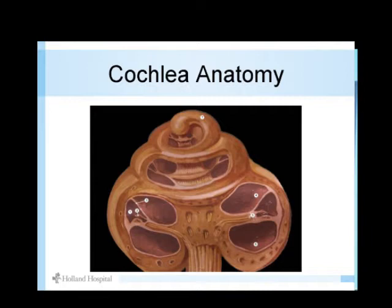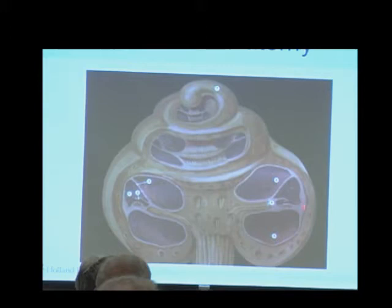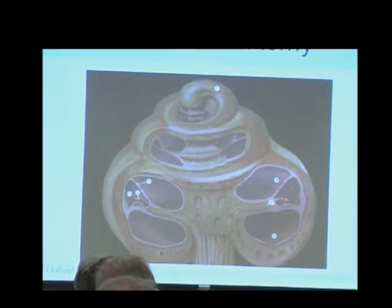If you look at the cochlea closer and cut a portion away, you can see it's like a conch shell. It's got a little tunnel that makes about two and a half turns. It has a single tunnel divided into three different canals — three little tunnels full of fluid. That plunger pushes in and out of one of them. In the middle of this conch shell, there is a nerve coming in that goes up to your brain, and each of those nerve fibers goes to a little switch called a hair cell.